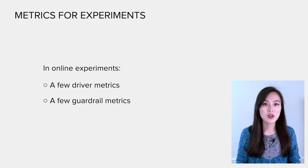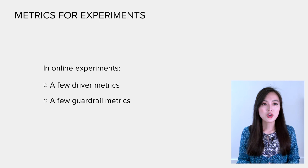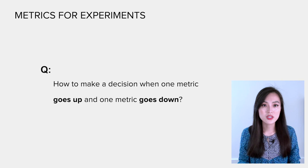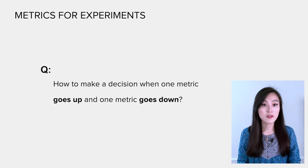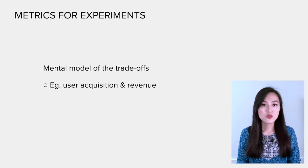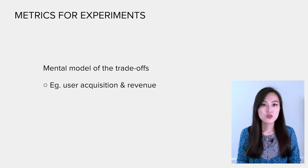In online experiments, we typically select a few driver metrics as key metrics as well as some guardrail metrics to monitor impacts on other aspects of the business. Now I want to share one question I get constantly: since we have multiple metrics for an experiment, how do we make the launch decision when one metric goes up and one metric goes down? It's a very reasonable question and this scenario happens often in practice. Many organizations have a mental model of the trade-offs they are willing to accept when they see any particular results. For example, trade-offs between user acquisition and revenue.